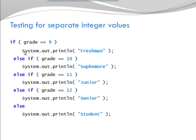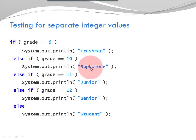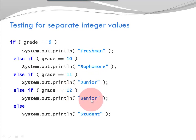Let's look at an example. Here I have an integer variable called grade. And if my grade is 9, then I print freshman. Else, if my grade is 10, I print sophomore. Else, if my grade is 11, I print junior. If it's 12, I print senior. If none of the above was the case, then I have a default — I just print student.